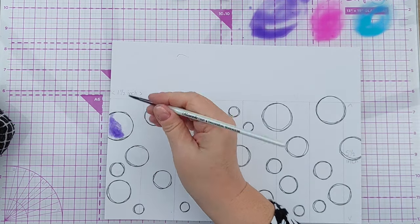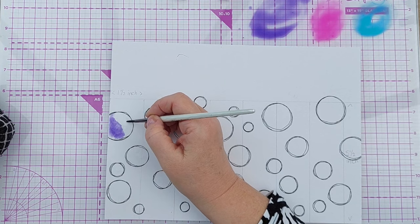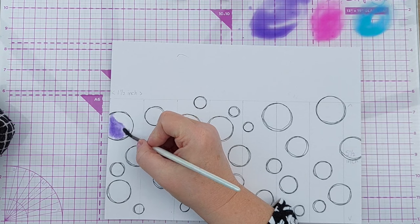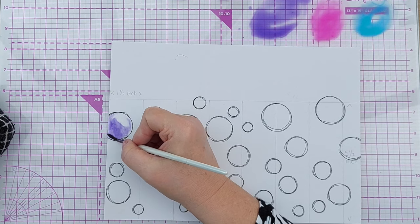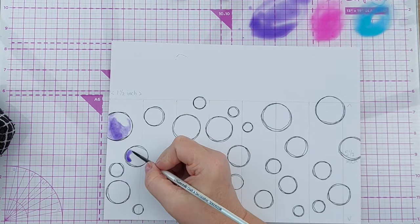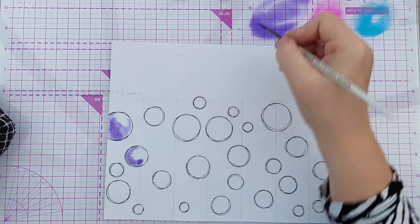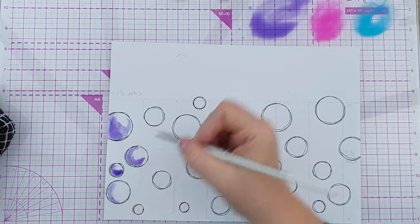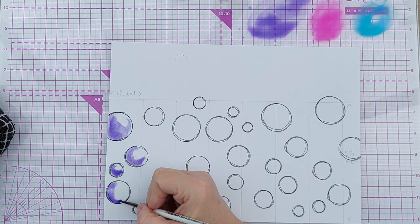What I have done is I've left a small area in the top right corner of the baubles without any water on, to act as a highlight. So the color won't go there because the color will only go where there is water.